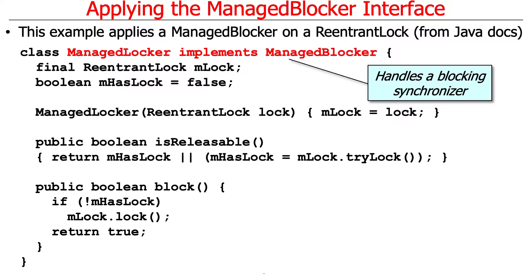There are a bunch of examples from the Java documentation of managed blocker. If you take a look at the managed blocker website you'll see these examples there. The first one is something called a ManagedLocker — a funny little pun on managed blocker. The intent of this is to handle blocking synchronizers, so something like a mutex or a reentrant lock.